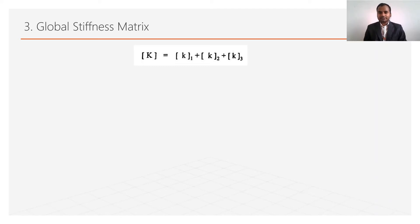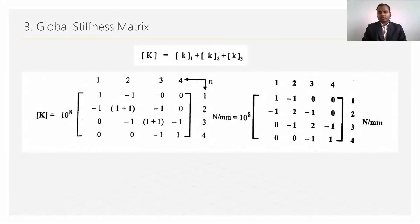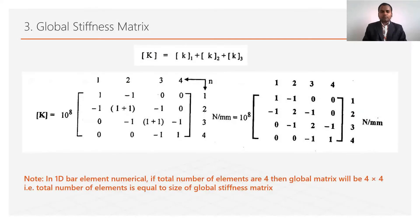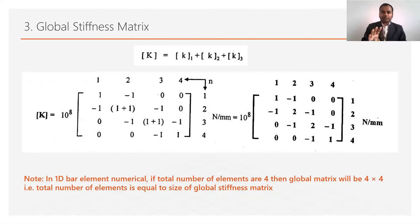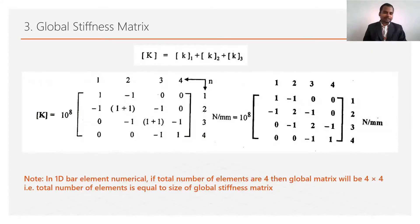If the global stiffness matrix is correct, the solution for displacement, stresses, and reactions will definitely be correct. An important note for 1D bar element numericals: if the total number of nodes is 4, the global stiffness matrix will be 4×4. If there are 6 nodes, the global stiffness matrix will be 6×6. This is a simple observation in 1D bar element numericals.